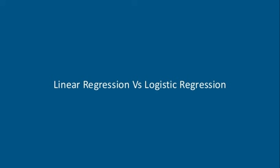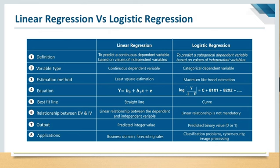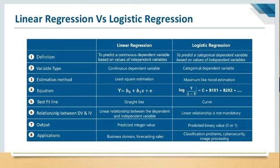Now we compare linear regression and logistic regression on several parameters. The first column shows parameters, the second shows linear regression, and the third shows logistic regression. On the definition parameter: linear regression is used to predict a continuous dependent variable based on the value of independent variables, while logistic regression is used to predict a categorical dependent variable based on independent variable values. The key difference is that linear regression uses a continuous dependent variable while logistic regression uses a categorical dependent variable.